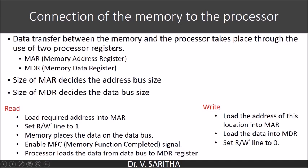Data transfer between the memory and the processor takes place through two processor registers: MAR (memory address register) and MDR (memory data register). The size of MAR determines the address bus size. The size of MDR determines the data bus size. So the address bus size and MAR register size will be the same, and the data bus size and MDR size will be the same.